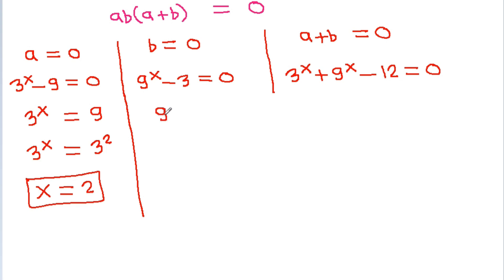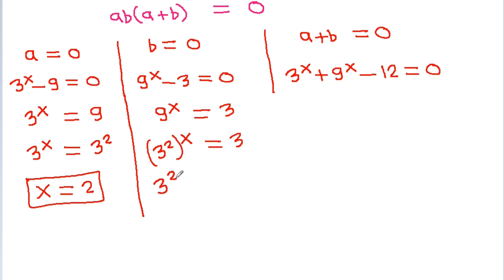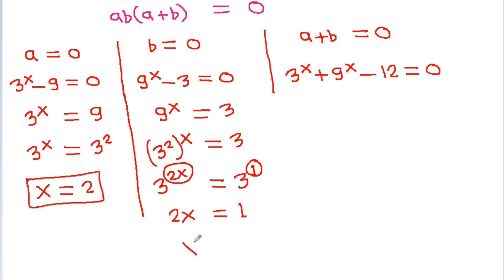And here, b is 9^x - 3, it is 0, so 9^x is equal to 3. And 9 is 3 squared, so 3^(2x) equals 3^1, meaning 2x equals 1, so x will be 1/2.